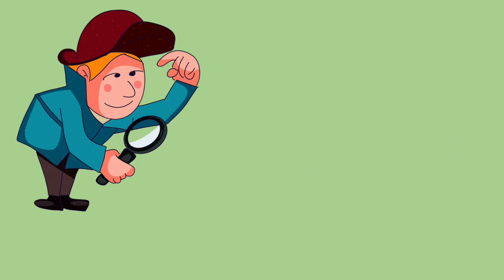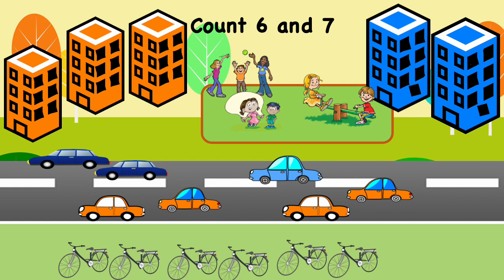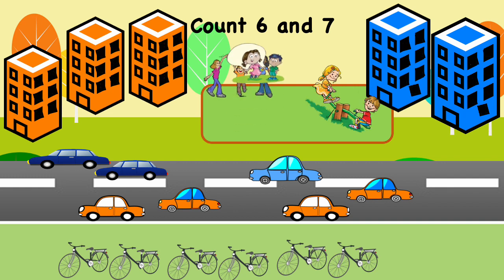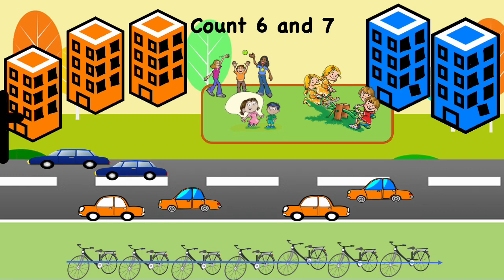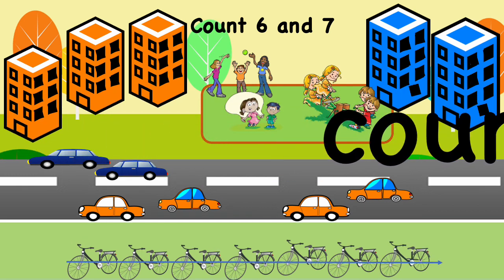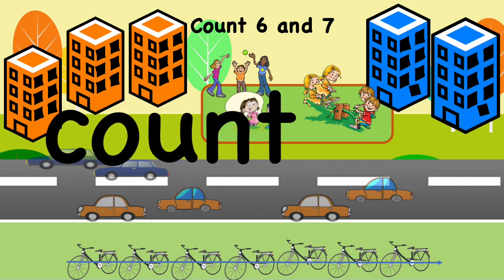Look at this picture very carefully. What objects do you see? There are some cars — some of them are blue, some are orange. I can also see windows on the building, some children, and some bicycles parked here. We need to figure out the objects that are 6 of the same kind.